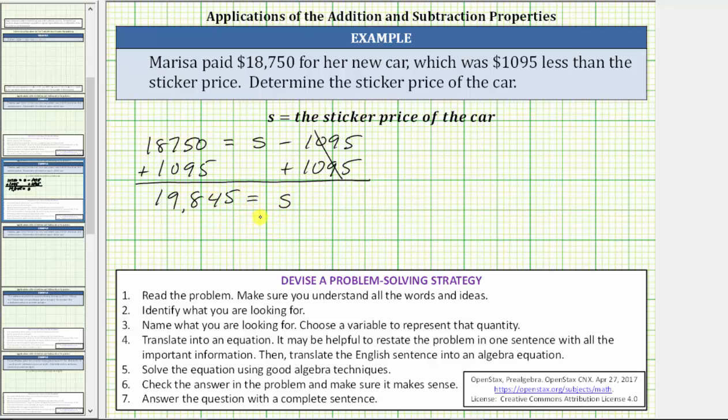But before we write this as a sentence, let's complete step six, which is to check the answer in the problem. To do this, we will substitute $19,845 for S into the original equation to verify that it does satisfy the equation.